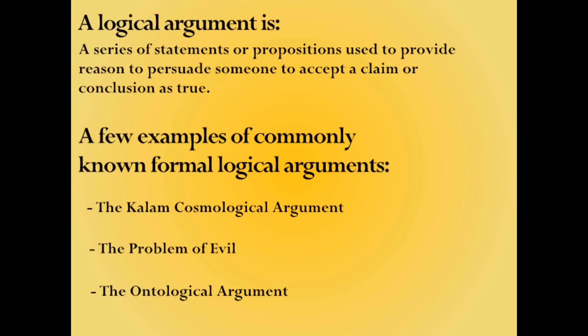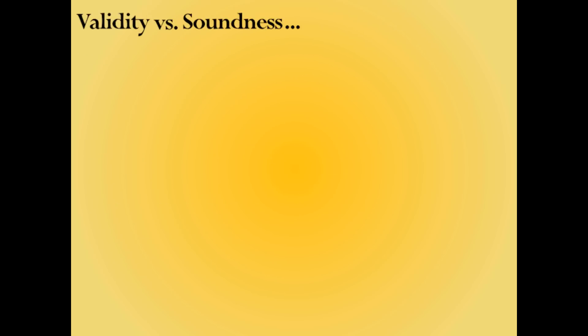Each of these arguments draw a conclusion from the premises through logical reasoning. These are examples of valid logical arguments, though their soundness may be up for debate. What's the difference between a sound argument and a valid argument? Well, validity and soundness are two ways of describing a logical argument's worth. So let's start with a couple definitions.